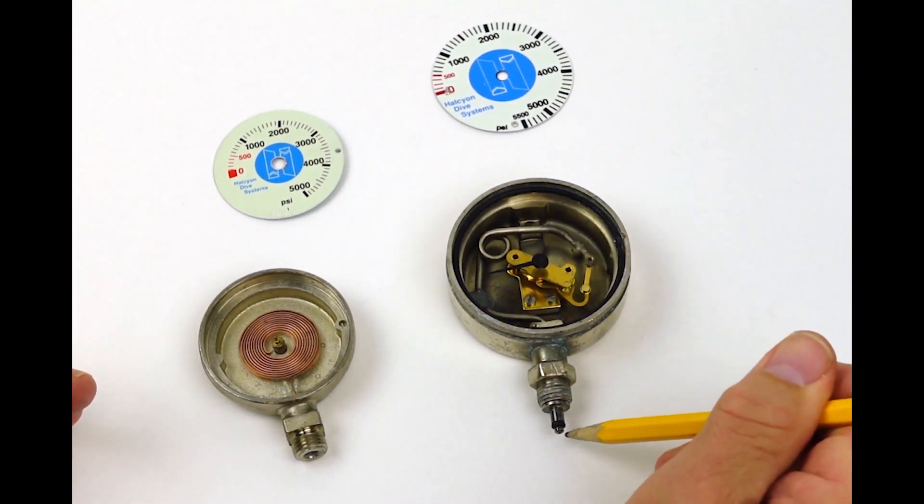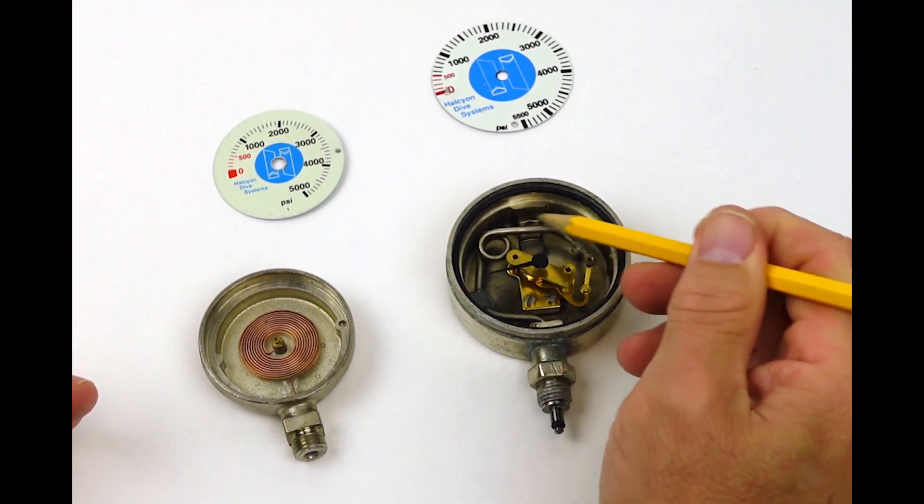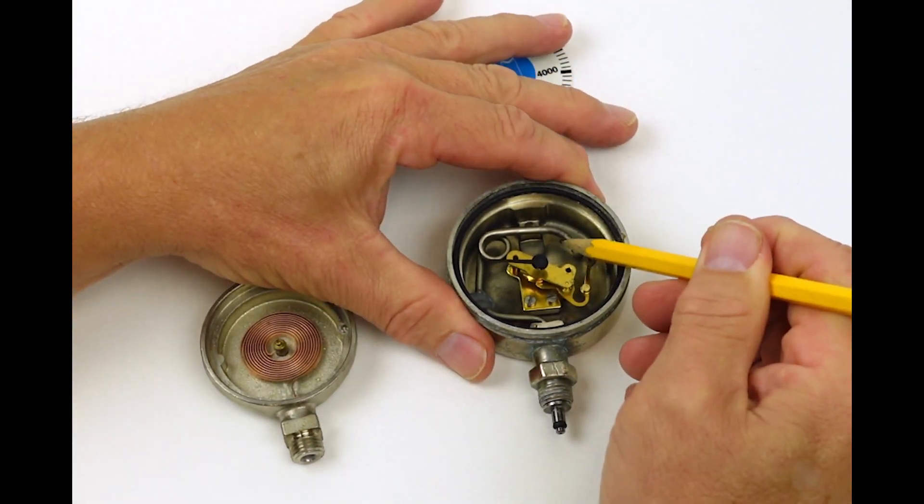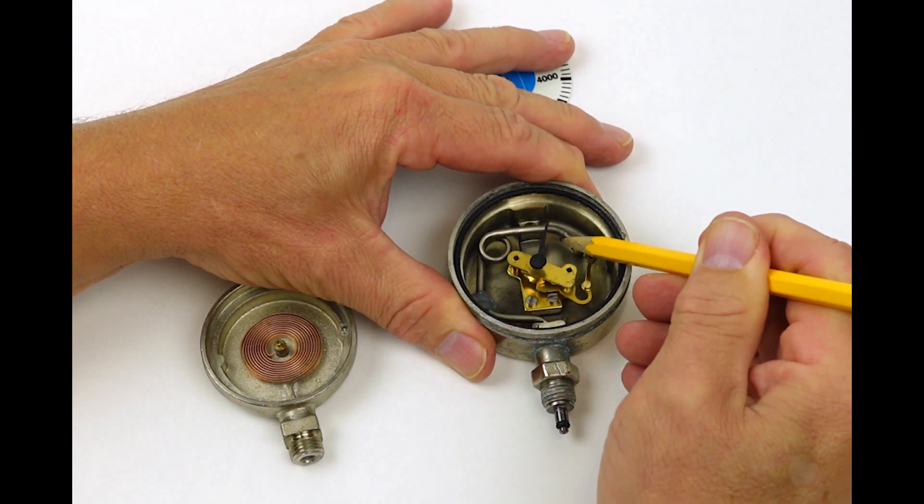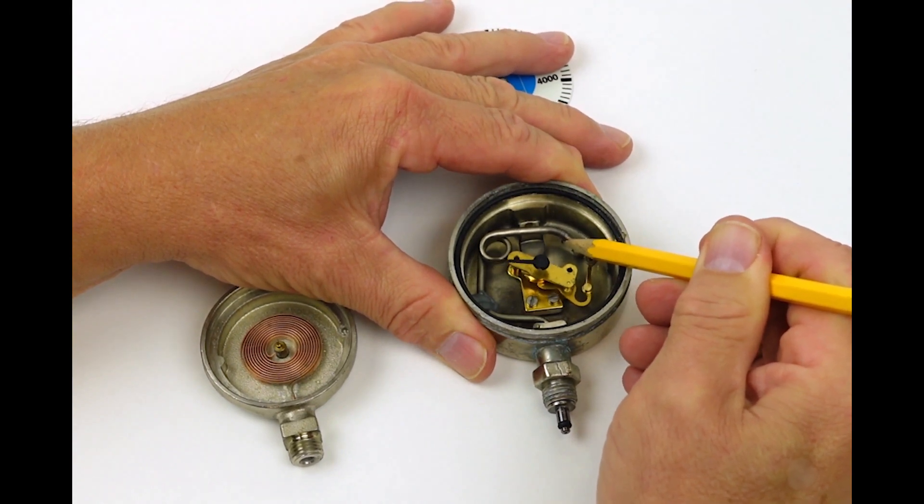When the gas is applied, the pressure is applied to the tube. The tube attempts to straighten out and you can see the dial move, you can see the needle moving.